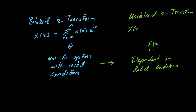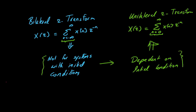The unilateral z-transform is X(z) = summation of x[n] z^(-n) where the summation now starts from 0 to infinity. The key difference between bilateral and unilateral z-transform is that in bilateral we do not consider initial conditions — we consider the system at initial rest — whereas for unilateral we consider systems which have some sort of initial conditions.